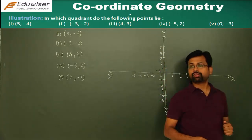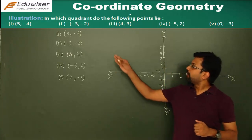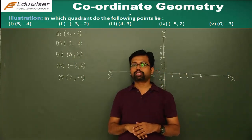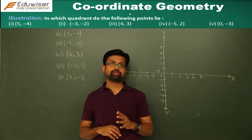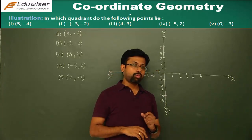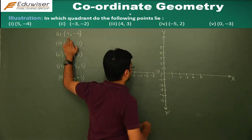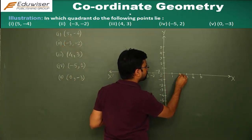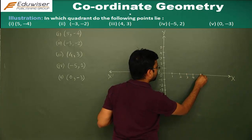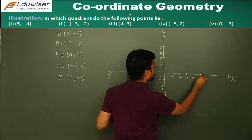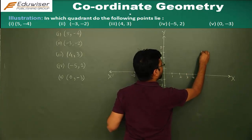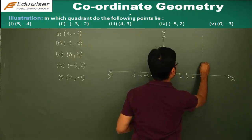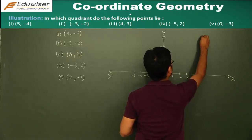The first point we need to find is (5, minus 4). For any point, the first part denotes the x-coordinate and the second part tells you about the y-coordinate. So the x-coordinate is 5. You move along the x-axis: 1, 2, 3, 4, 5. So this is where it would be — you need to draw a line parallel to the y-axis. This is where the point is going to lie, somewhere on this line.